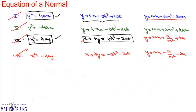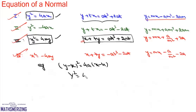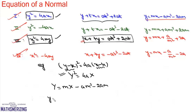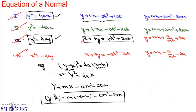Now suppose the parabola is not in standard form but has axes parallel to the coordinate axes. For example, (y - k)² = 4a(x - h). We compare it with Y² = 4aX, where Y = y - k and X = x - h. The equation of normal for the standard form is Y = mX - am³ - 2am. Substituting back, we get y - k = m(x - h) - am³ - 2am, giving us the normal equation for shifted parabolas.